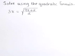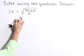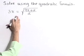Solve using the quadratic formula. The equation 3x is equal to the square root of 9x plus 2 all over 2. We're going to start by eliminating the radical. We'll do that by squaring both sides.